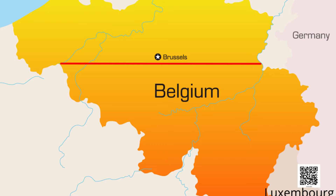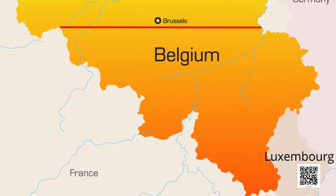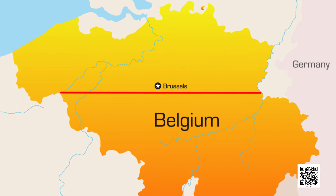Belgium is a small country, smaller than Haryana of India, and its population is only about one crore. When we see the map of Europe, Belgium is surrounded by four major countries: in the north it is surrounded by Netherlands, in the west and southwest there is France, in the southeast there is Luxembourg, and in the east there is Germany.